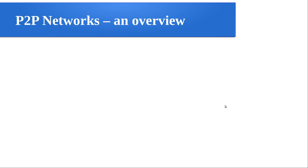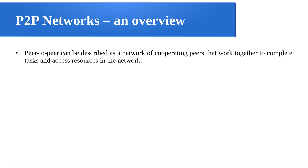Now an overview of P2P networks. Peer-to-peer can be described as a network of cooperating peers that work together to complete tasks and access resources in the network. You can think of a divide-and-conquer approach: whenever a machine wants to do a bigger task, it divides it into smaller sub-tasks assigned to different peers. All peers compute their given task, and finally all results are merged to get the solution to the original problem.